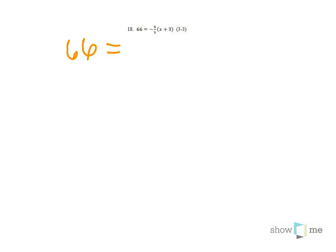you rewrite the problem as 66 equals negative 6 over 5x minus 18 over 5. And you can either put that into your calculator or you can multiply across.